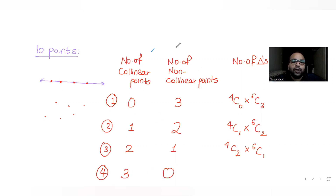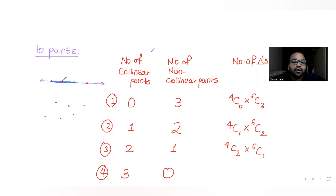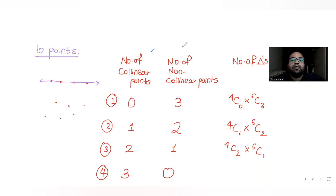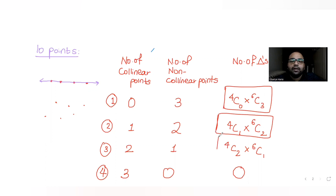Case 4 would be selecting 3 collinear points and 0 non-collinear points. However, if three points all lie on a straight line, they do not form a triangle — they only give a straight line. So you cannot form a triangle when all three selected points are collinear, and the number of triangles in this case is zero.